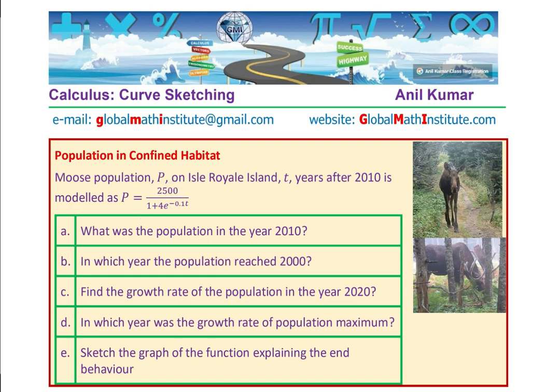I hope you have understood the complete concept of how to work with real-life situations involving logistic population models. The population rapidly increases initially and then tapers toward the maximum limit of 2500 as resources become limited on the island. Feel free to write your comments and share your views. If you like and subscribe to my videos, it would be great. You can send an email at the address given, and check our website for new updates. Thank you and all the best.